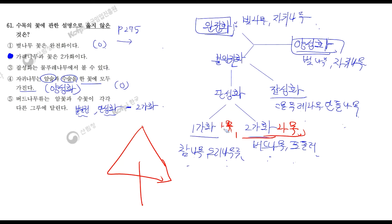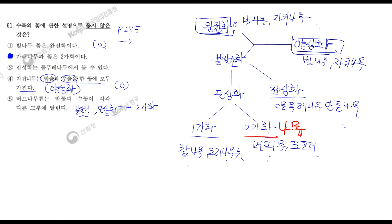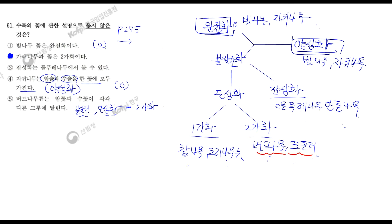1가화라고 쓴 이유는 참나무류와 오리나무류 같은 경우 위에, 즉 정화에는 암꽃이 피게 되고, 그 밑에 부분에는 수꽃이 피게 됩니다. 이런 형태적인 특성을 가진 것이 1가화 꽃이고요. 2가화는 암꽃과 수꽃 자체가 나무가 두 개인 거예요. 대표적으로 은행나무가 있죠. 숫나무 있고 암나무 있지 않습니까? 가로수로 심으려고 하면 암나무를 제거하고 수나무만 심어야 되잖아요. 대표적인 예로 버드나무류와 포플러류가 있습니다.